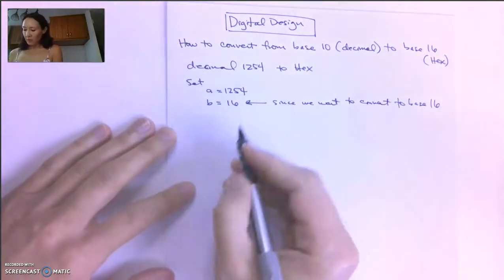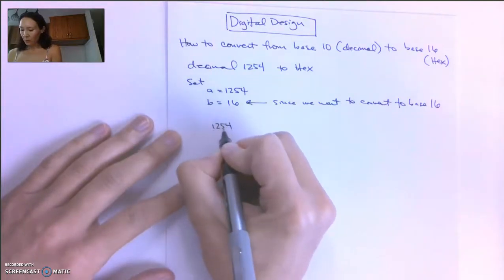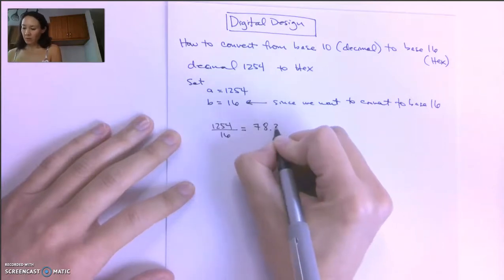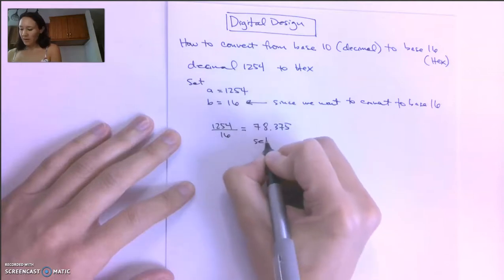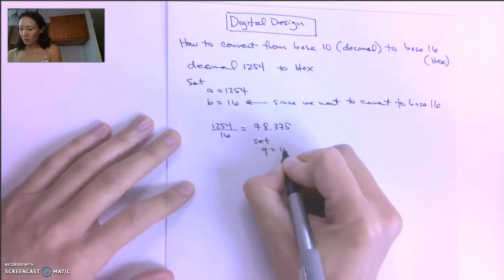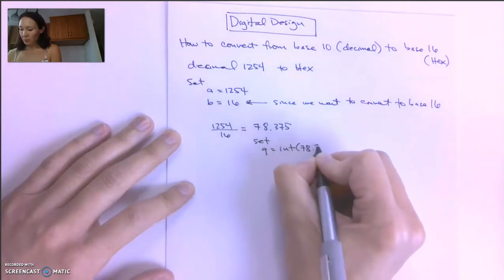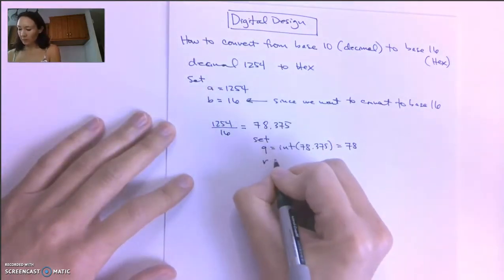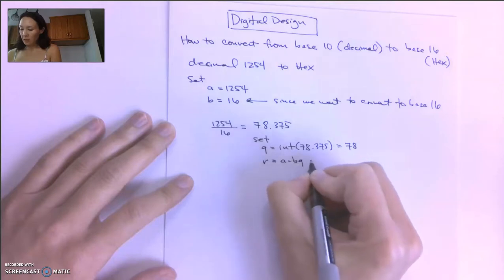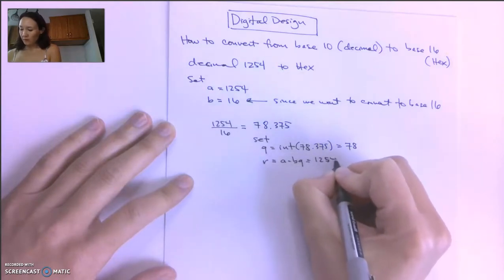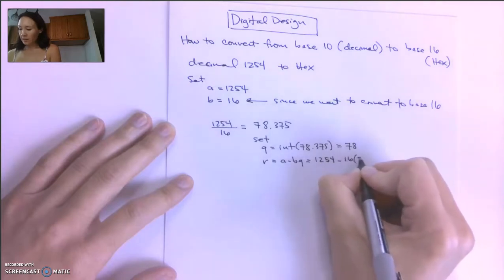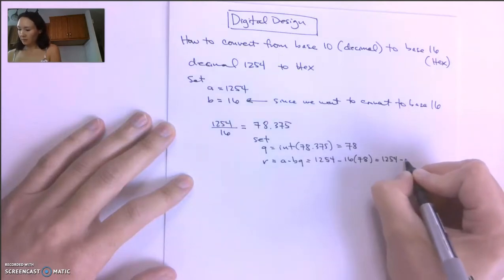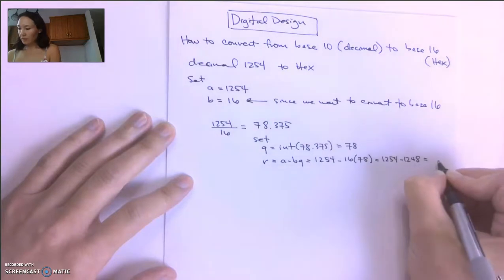Great. So then we take these and divide them. 1254 divided by 16 gives us 78.375. We set Q equal to the integer part of 78.375, that's just 78. Then we set the remainder to A minus BQ, which is 1254 minus 16 times 78. This is 1254 minus 1248, so our remainder is 6.